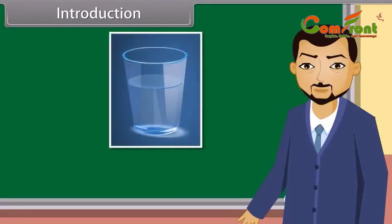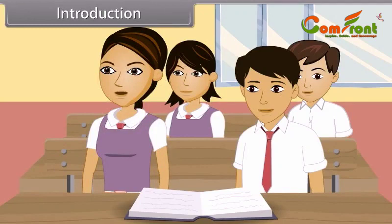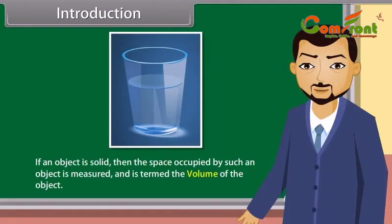This is a glass which is half filled with water. We can easily measure the capacity of a glass or the volume of water contained by the glass. A student asks: what do you mean by volume? If an object is solid, then the space occupied by such an object is measured and is termed as the volume of the object. Come, I will teach you more about volume today.